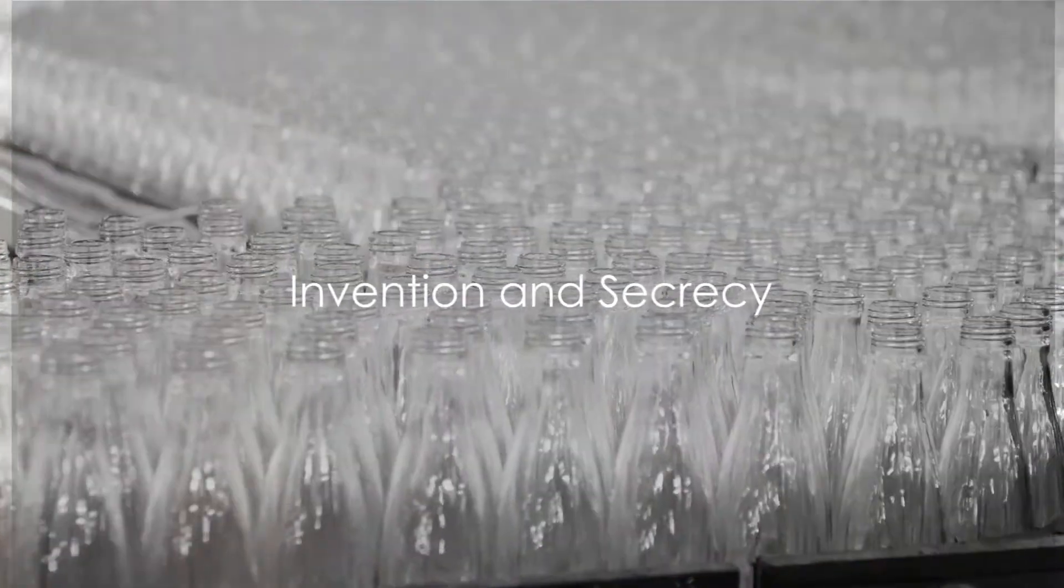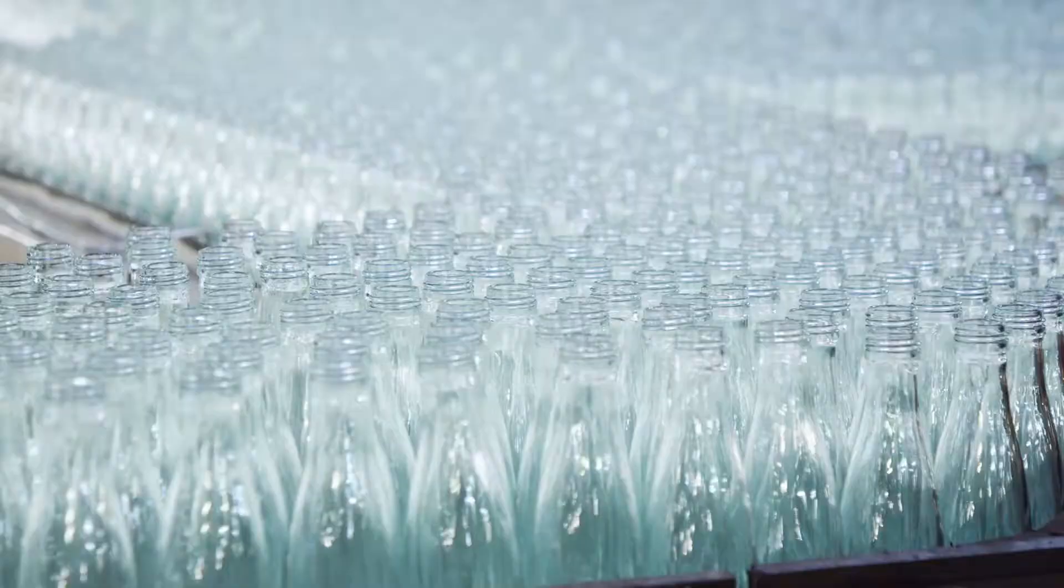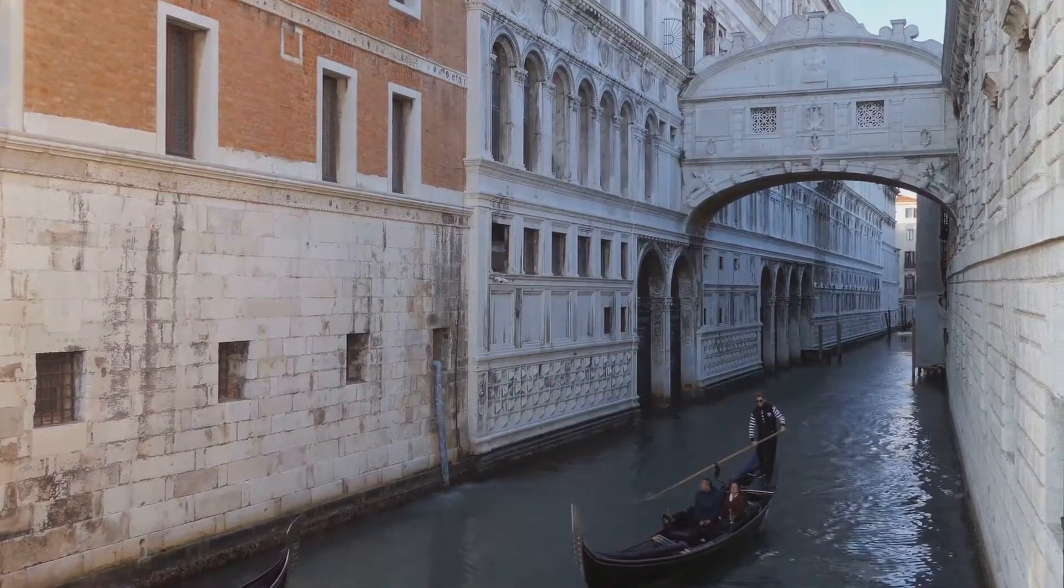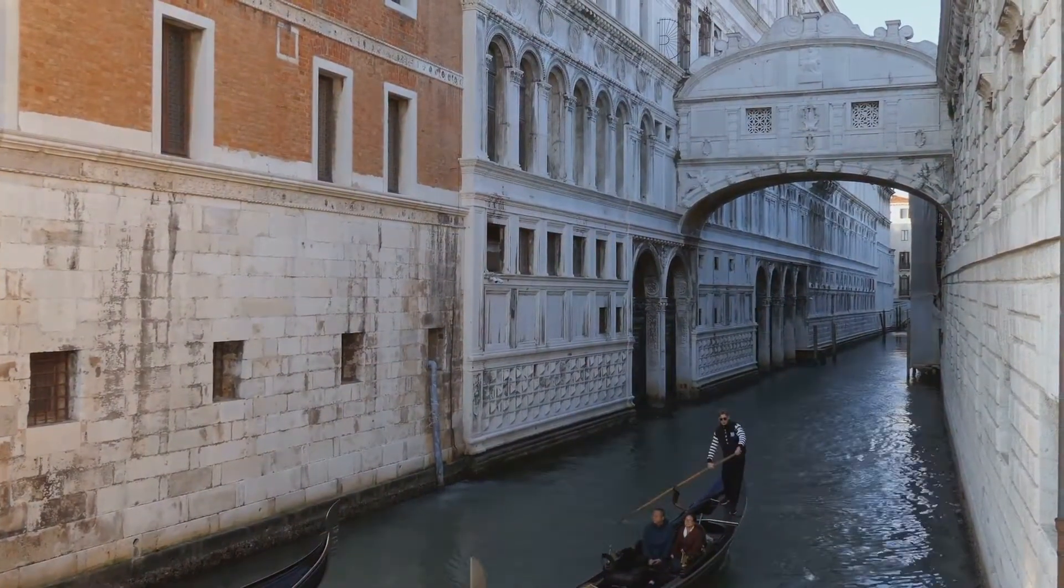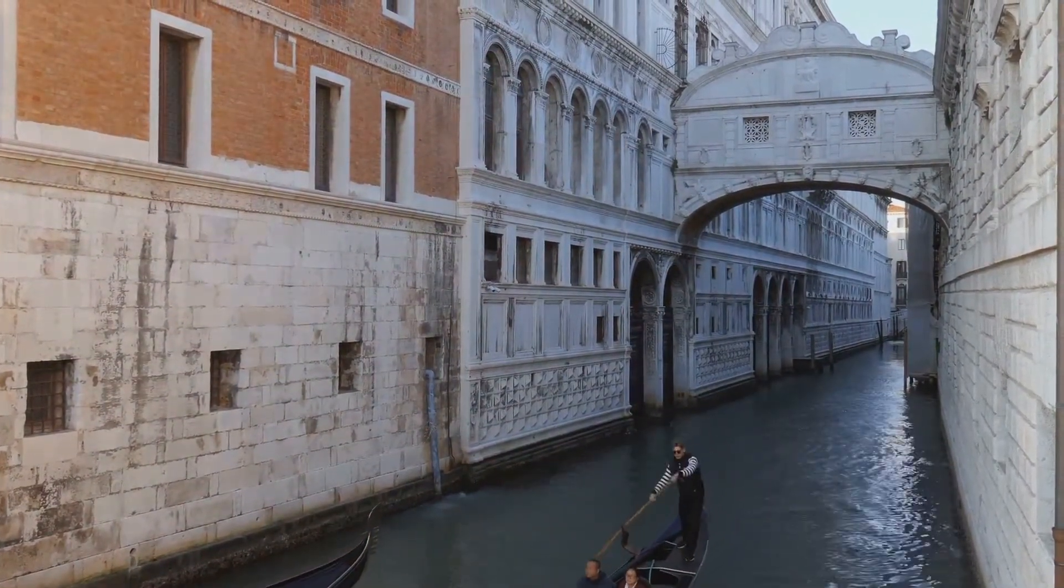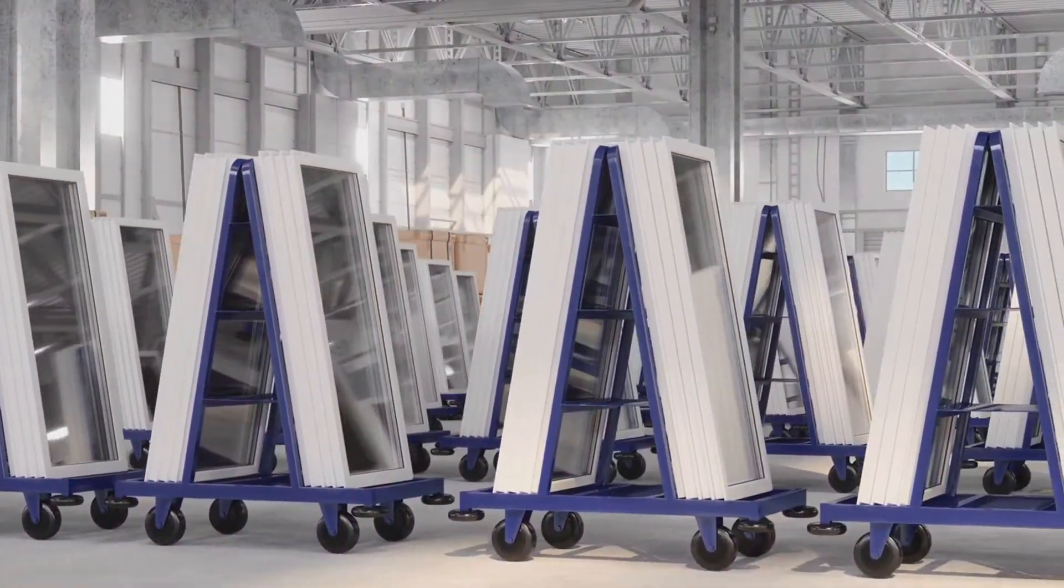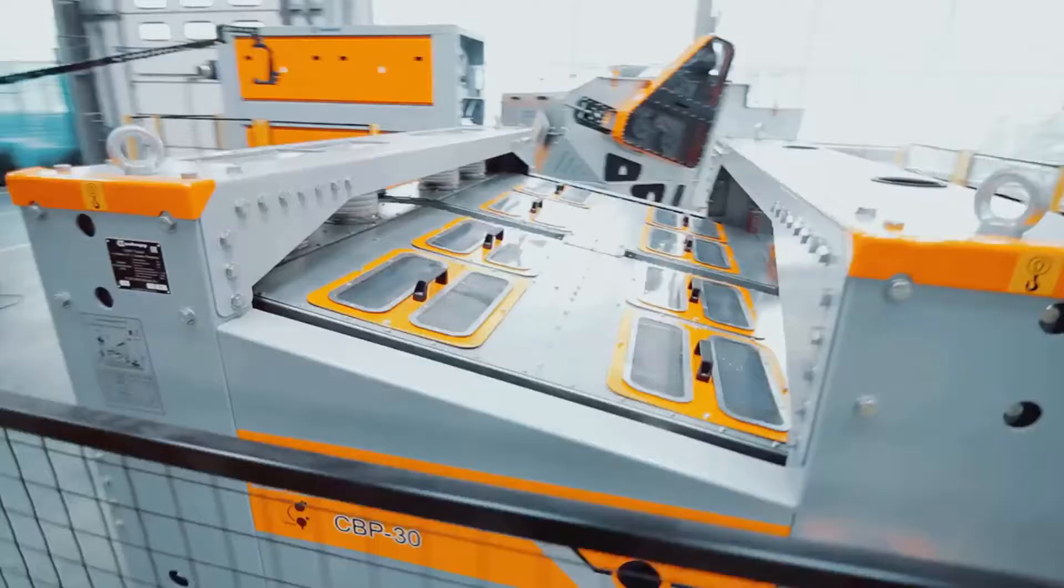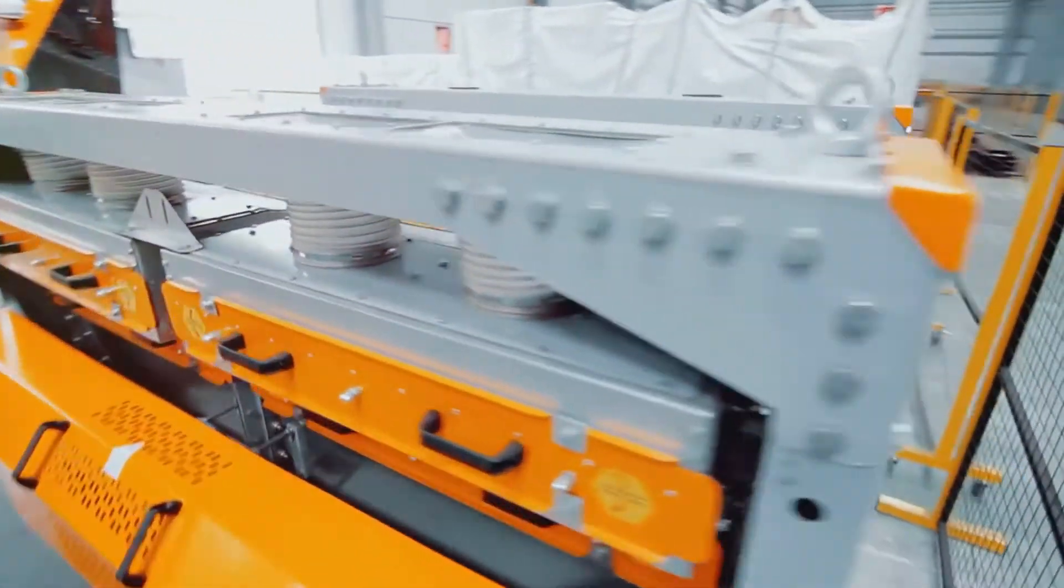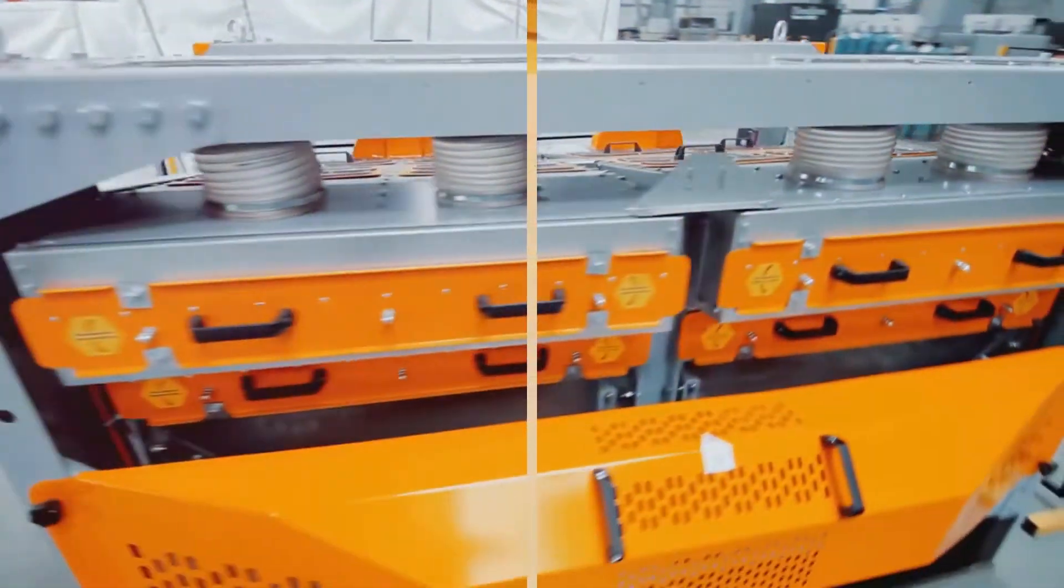Ever wondered how mirrors, an everyday object in our lives, are made? The story begins with the Venetians, who invented mirrors and guarded the process for nearly a century. It wasn't until industrial espionage in the late 16th century that the secret was unveiled. Now that you know the secret history of mirrors, let's delve into how they are actually made.